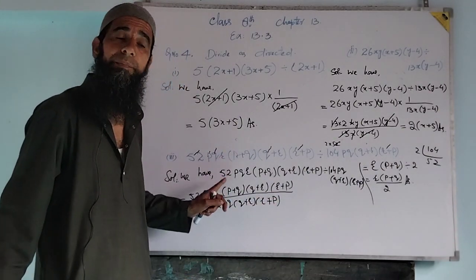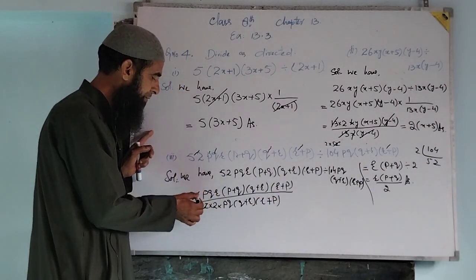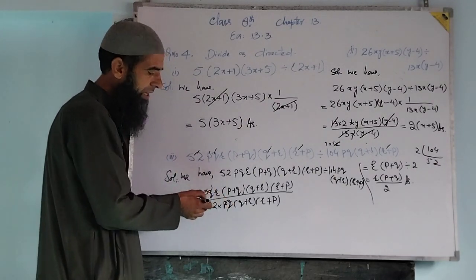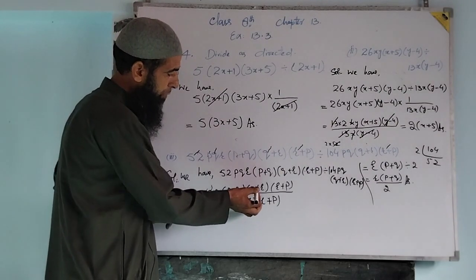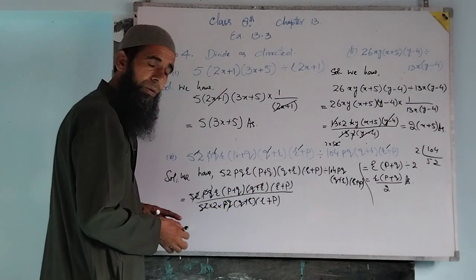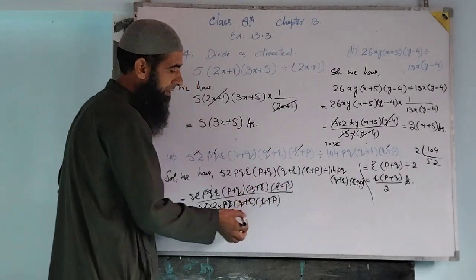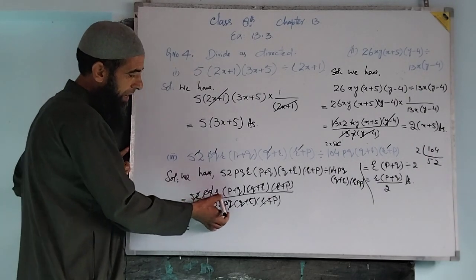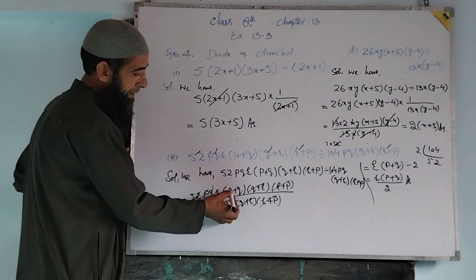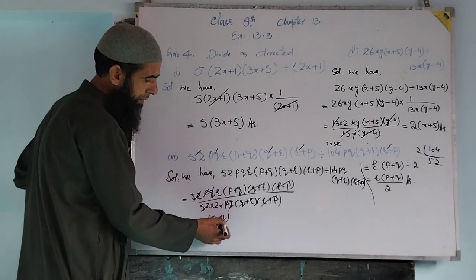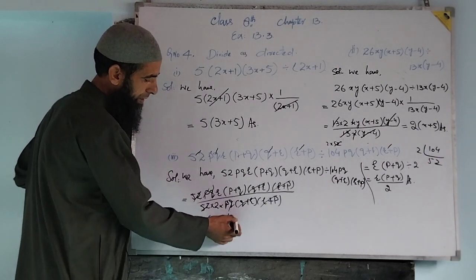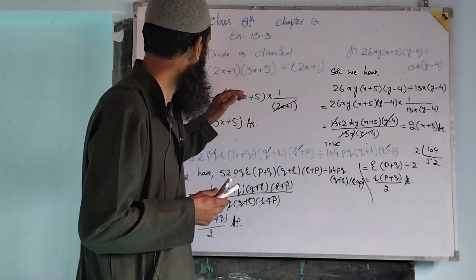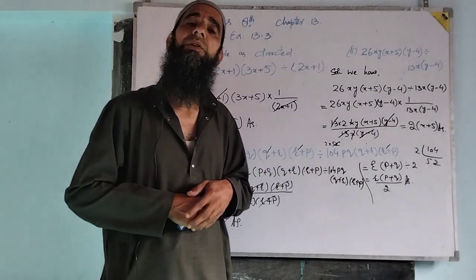Now we cancel the common factors: 52 cancels with 52, P cancels with P, Q cancels with Q, and (Q+R) cancels with (Q+R), and (R+P) cancels with (R+P). We get the final answer: R times (P+Q) divided by 2. This completes question number 4, exercise 13.3.